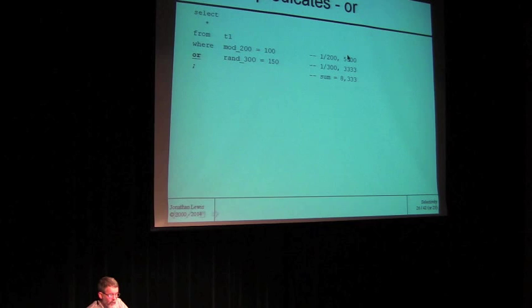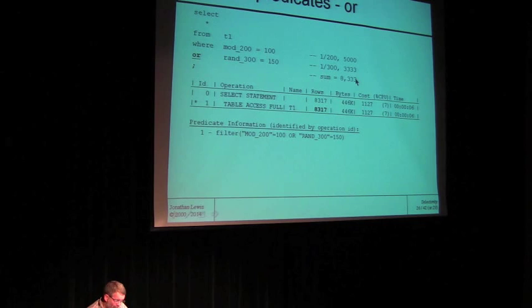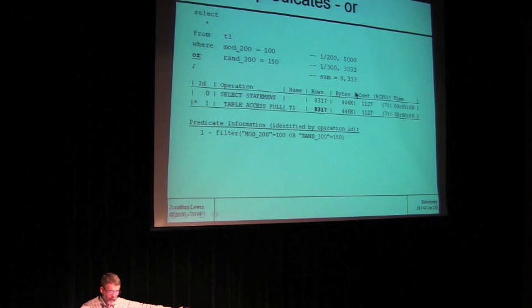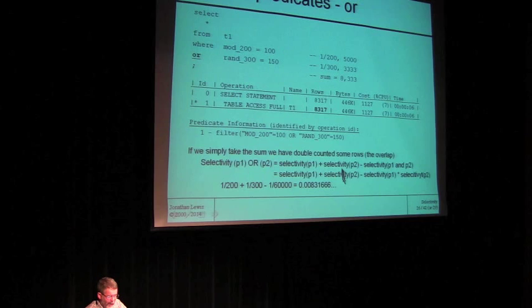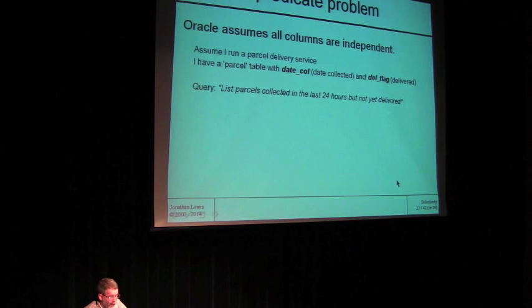For OR: there are 5,000 rows for mod_200 equals 100, and 3,333 rows for the other. We want both sets of data — add those two numbers to get 8,333, but the optimizer predicts slightly less. Why? Because if you just add these two numbers, you've counted some rows twice — the ones where both mod_200 is 100 AND mod_300 equals 150. So you have to subtract those off. The formula: add together the two selectivities and subtract the combined (multiplicand) selectivity. That's how Oracle handles OR predicates.